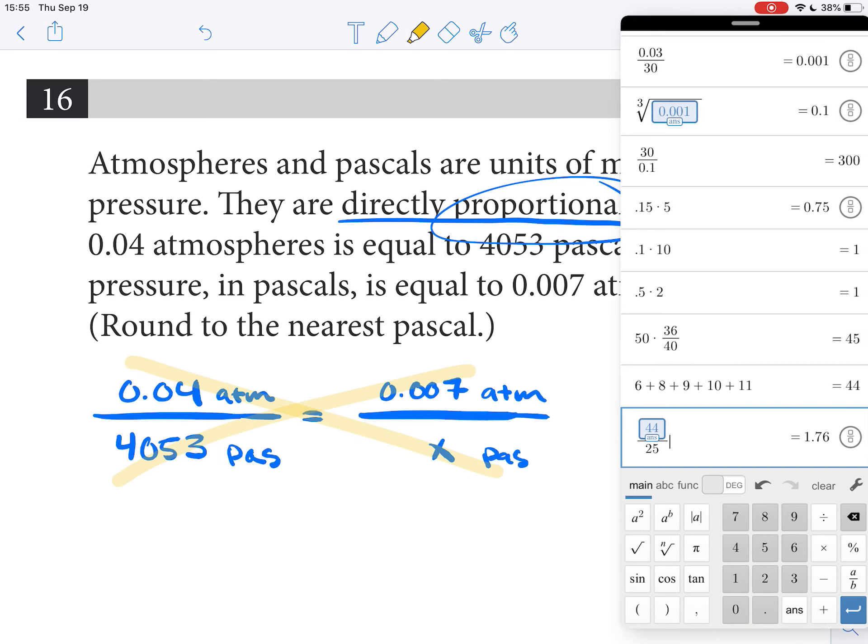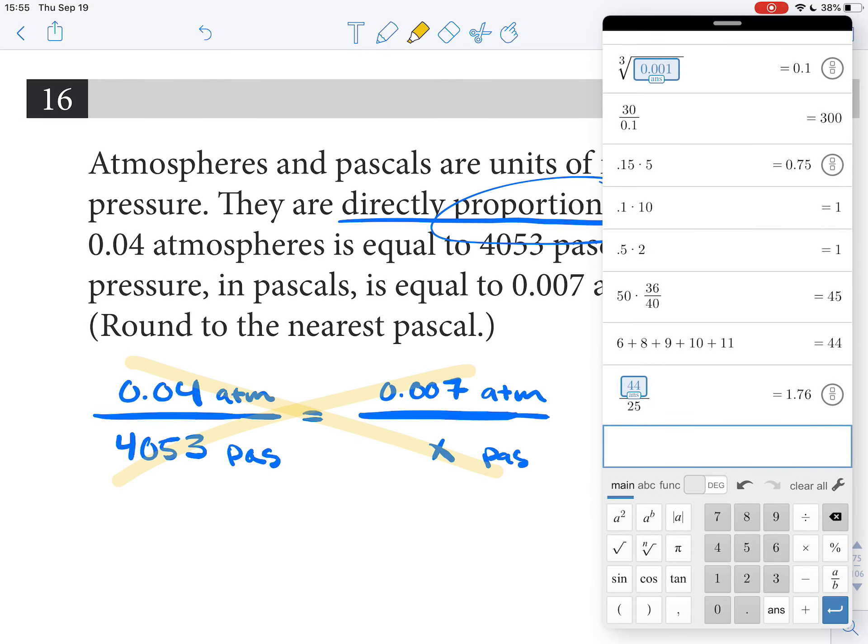We're going to cross-multiply. We're in the calculator section, so this is helpful. Cross-multiplying is going to give us 0.04x equals 4053 times 0.007, and then we're going to divide by 0.04. I like to write out what I'm doing by hand, because now when I go to the calculator, I'm just going to do it once, and I limit my calculator use.